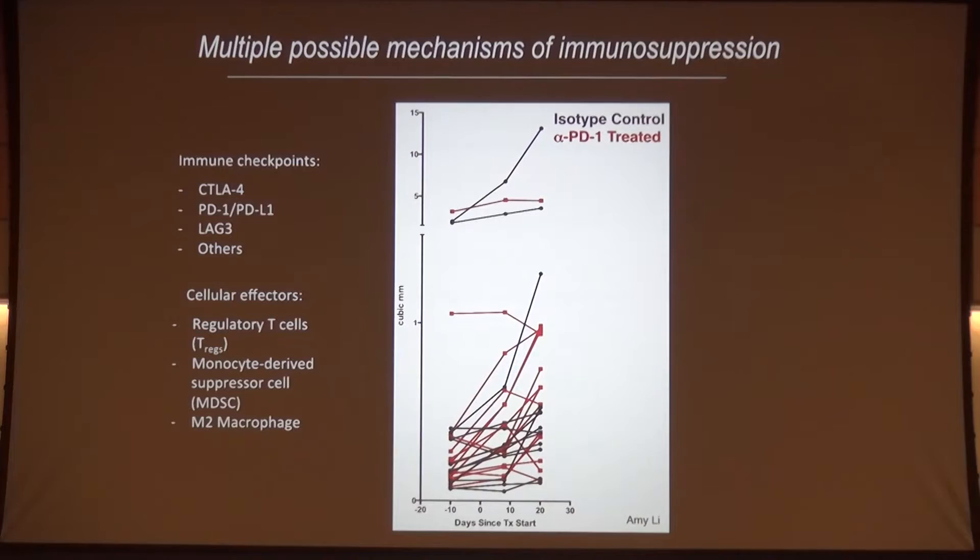We know that PD-1 is upregulated in these exhausted T cells. That's not surprising because antigen-experienced T cells usually upregulate PD-1, but it's also an exhaustion marker and the target of checkpoint therapy. Amy Lee in the lab asked whether blocking PD-1 would restore immune responsiveness to these exhausted cells in this model system. We received antibodies from Gordon Freeman and Arlene Sharp. Perhaps to our surprise, in contrast to control tumors which continue to grow, the PD-1-treated tumors likewise continue to grow — PD-1 is ineffective in this model. We are now exploring various combinations to try to improve this response.